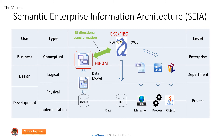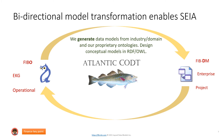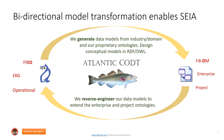What COD performs is a bi-directional transformation between the ontology and the data model, and bi-directional transformation enables SEIA. On the left-hand side we see the FIBO, enterprise knowledge graph, operational ontologies. On the right-hand side we have 50M enterprise and project models. We generate data models from industry domain and our proprietary ontologies, we design conceptual models in RDF-OWL, and we reverse engineer our data model to extend the enterprise and project ontologies.